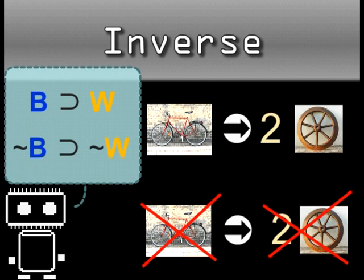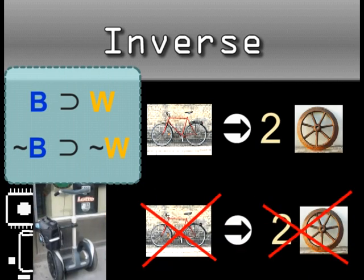The inverse of a statement isn't necessarily true. In this case, there are two wheeled objects that are not bikes.